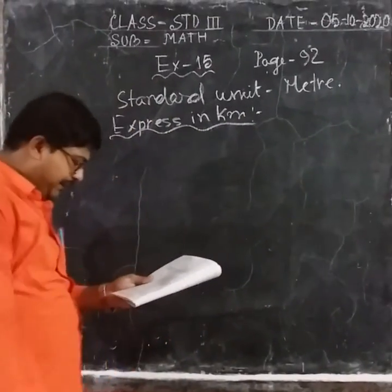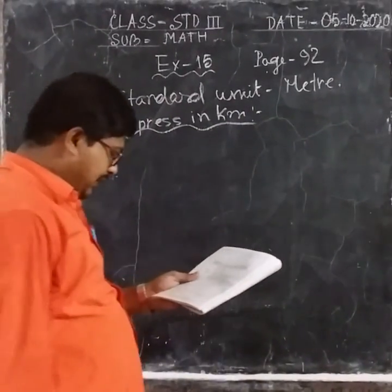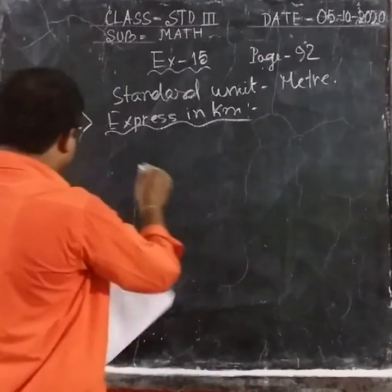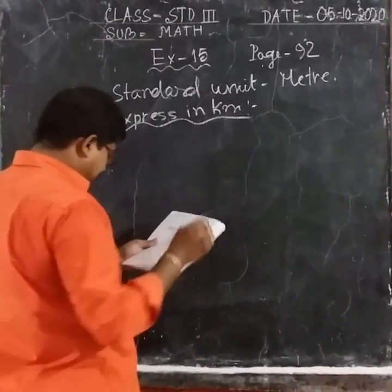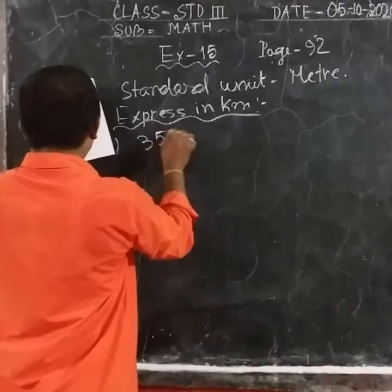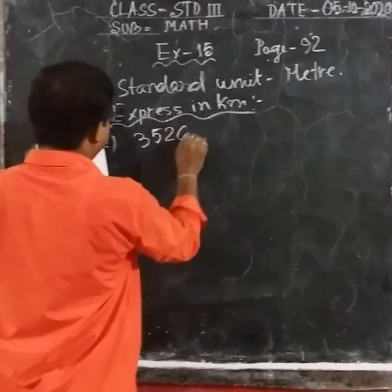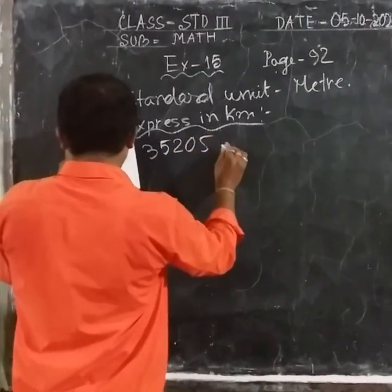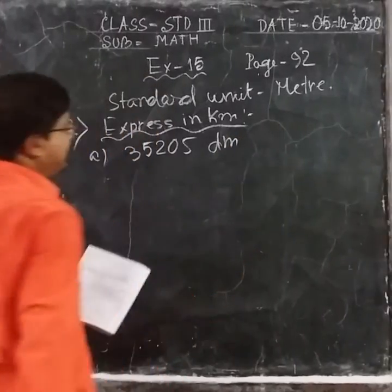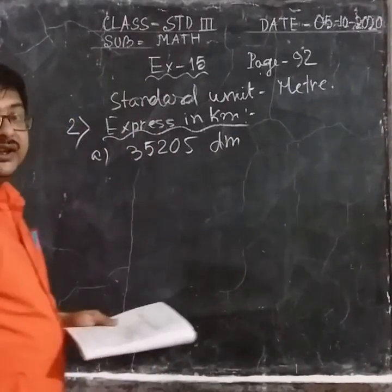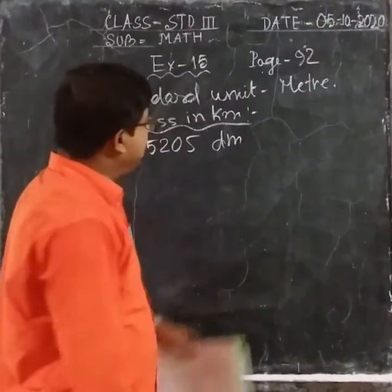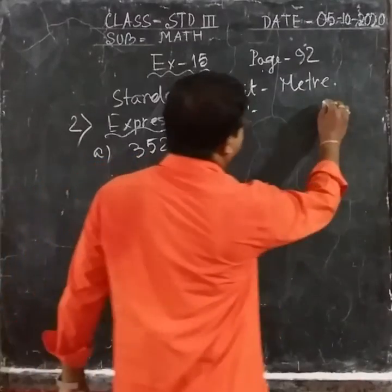Kilometer — that means kilometer is what we are converting to. Question number A, that is 35205 DM. DM means Dekameter. Now we have to put a table.